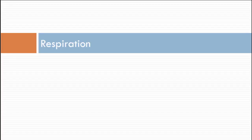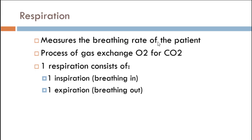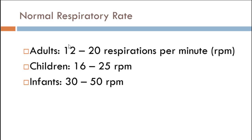Respiration is another vital we'll talk about — it's involved more in cardiovascular assessment. You're basically measuring the breathing rate of your patient or client. This is the process of gas exchange: oxygen for carbon dioxide. One respiration is one breath cycle — one inspiration and one expiration. Breathing rate for adults is about 12 to 20 respirations per minute. Children breathe a little faster, and infants breathe even faster: 30 to 50 — almost three times the adult rate.